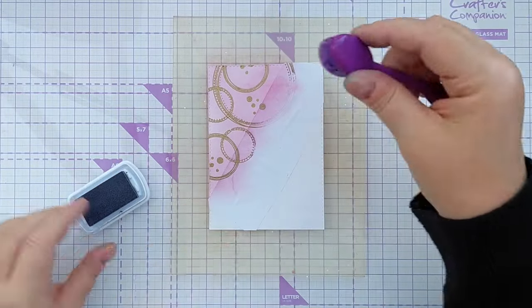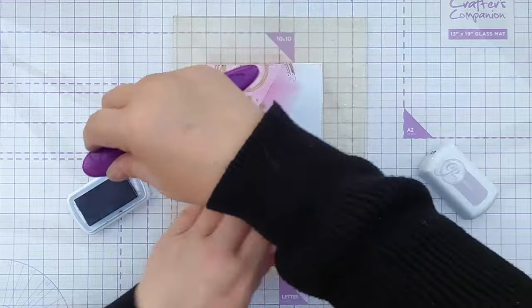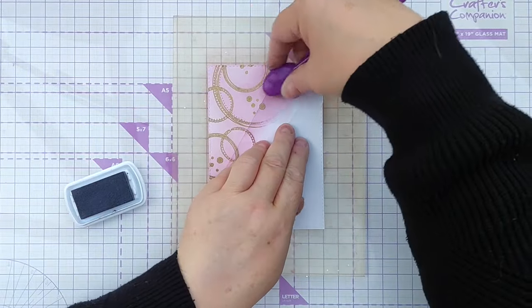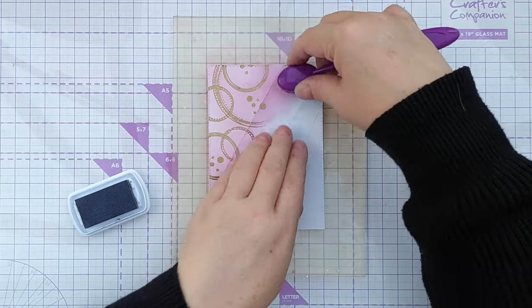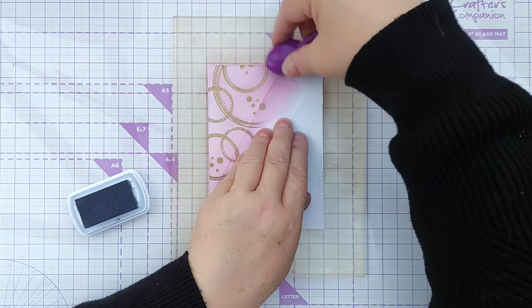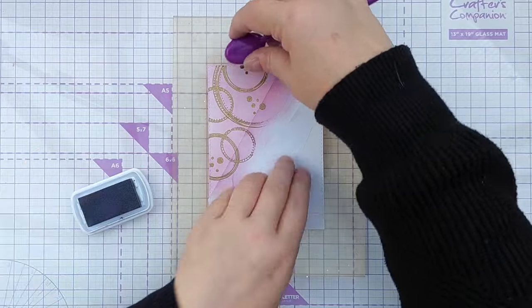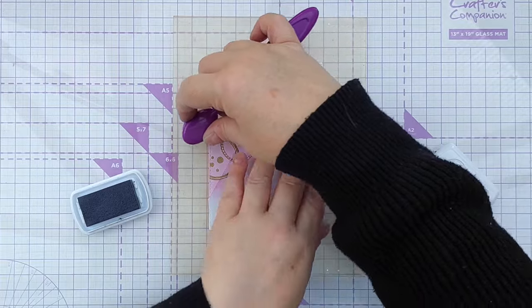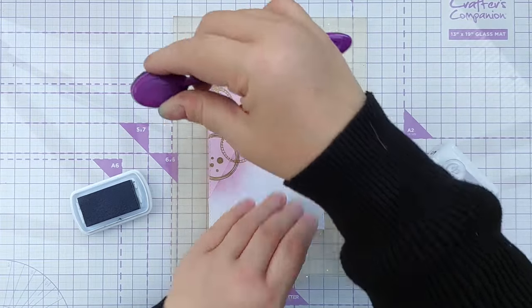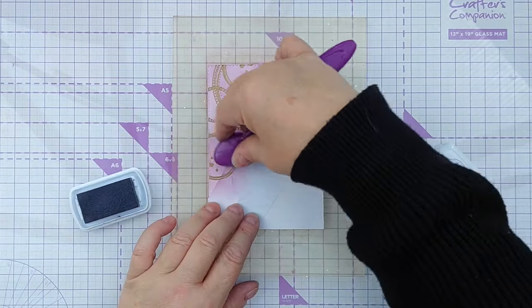I'm going to go in lightly to start with and gradually build up the color. I just want to add a bit of variation by bringing in some Serene. Rose Petals is a red on the color wheel and Serene is a blue violet, so they're fairly close to each other on the color wheel, analogous-ish colors. They should blend without making mud.